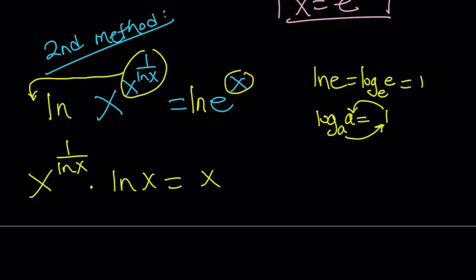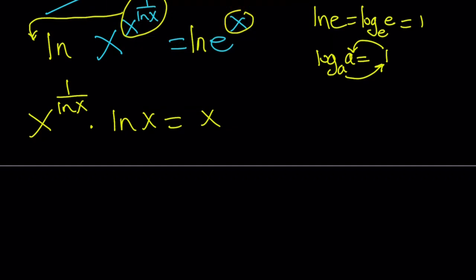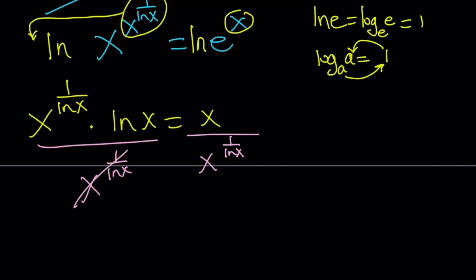There are a lot of ways to go about this. I'm going to put the x's on the same side first since we have two expressions with the same base. We divide both sides by x to the power 1 over ln x, which gives 1 on that side. We still have the conditions x ≠ 1, x is positive, and x ≠ 0 (which is already covered by x being positive). Now we have ln x equals x to the 1 divided by x to the 1 over ln x.